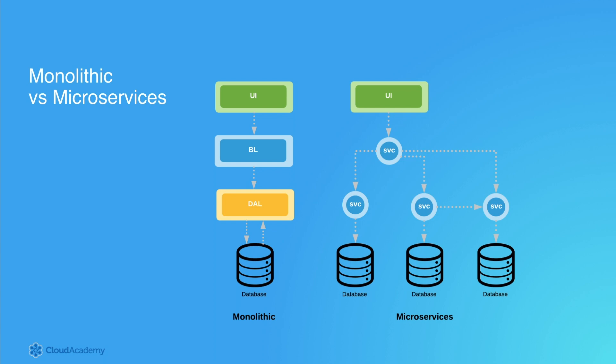Communication passes synchronously from top to bottom and then back in the reverse. All data resides in a single database and access to it must be performed through the data access layer. Often this monolithic design is implemented in a single language and is built and deployed as a single unit, meaning there is often tight coupling between components and/or layers.